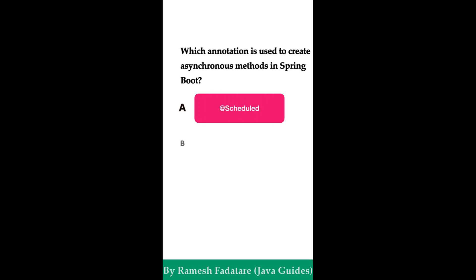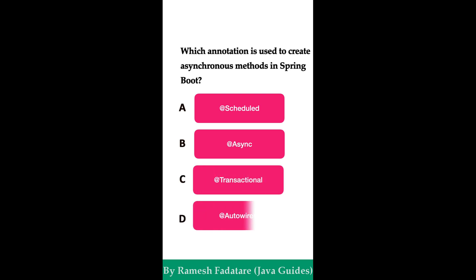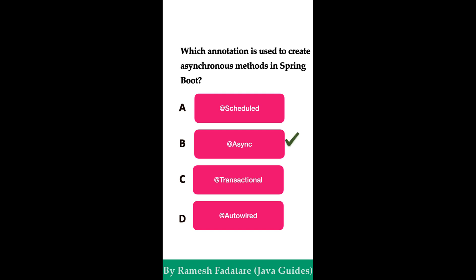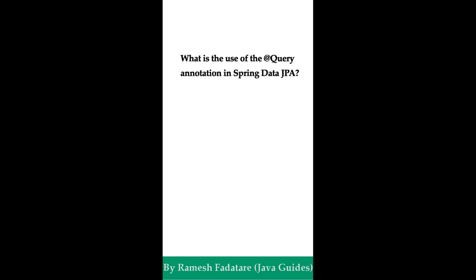Which annotation is used to create asynchronous methods in Spring Boot? Option A: @Scheduled. Option B: @Async. Option C: @Transactional. Option D: @Autowired. The correct answer is option B, @Async. The @Async annotation in Spring Boot is used to mark a method as asynchronous, allowing it to run in a separate thread without blocking the main execution flow. When applied to a method, Spring will execute it in the background, returning immediately to the caller while the task continues to run.